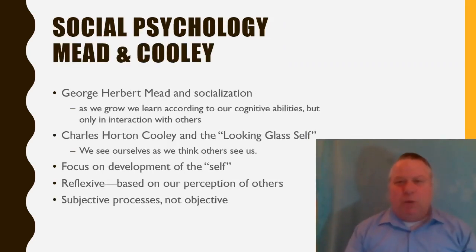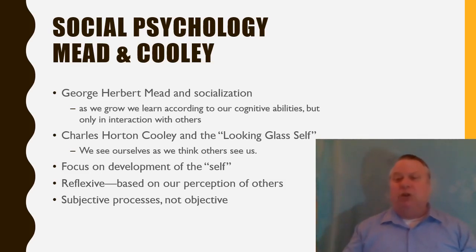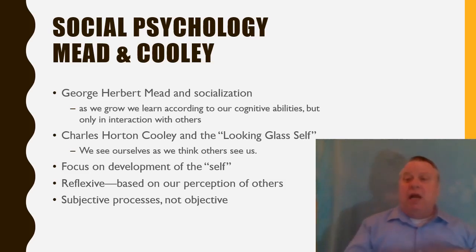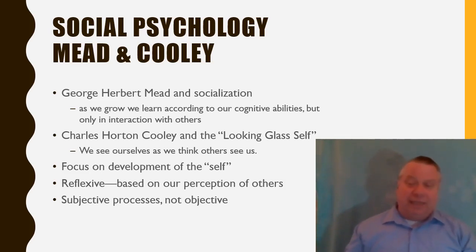So the earliest perspective is what we call social psychology, and this is the easiest to understand because people can usually relate to psychology. Psychology is the development of self. Social psychology focuses on the relationship between the individual and society as you grow up particularly. George Herbert Mead focused particularly on socialization and developed the idea of development through cognitive stages — so as we are able to understand things physically based on our biological cognitive development, we learn certain things through our social interaction with others. Without that interaction, we may never actually fully develop. We'll be talking about socialization in a couple of lectures.